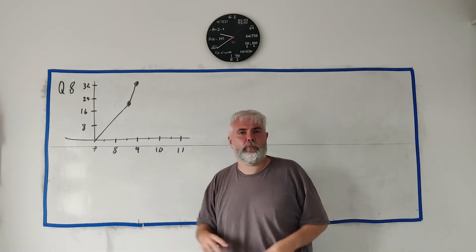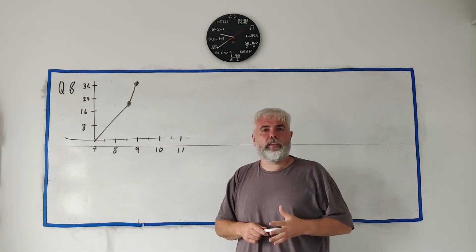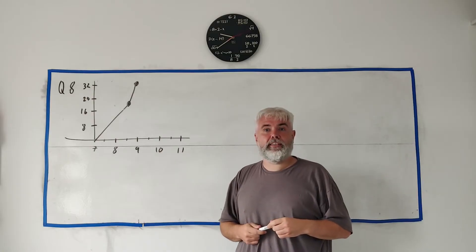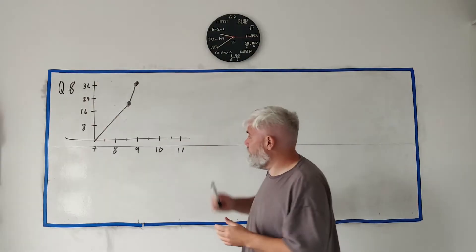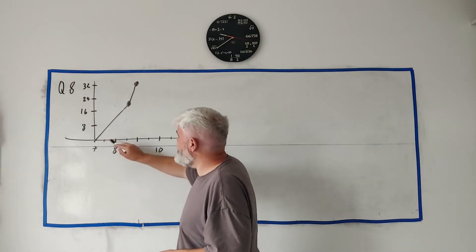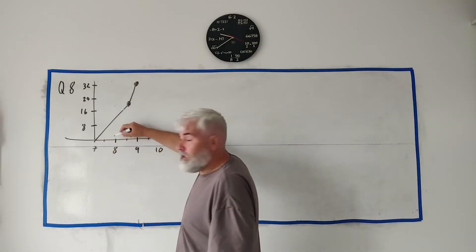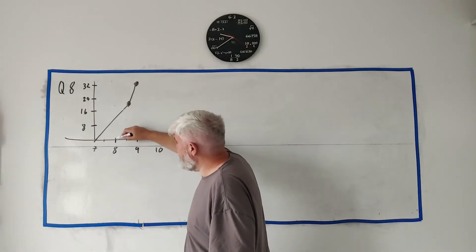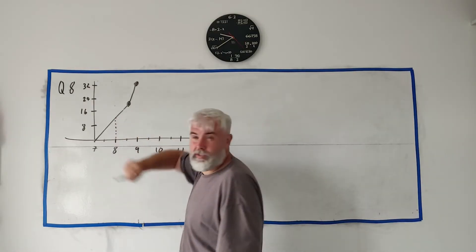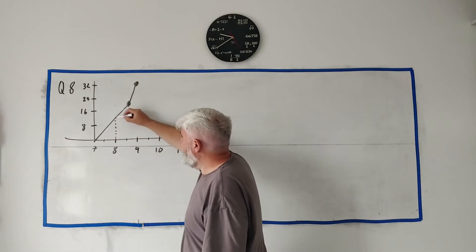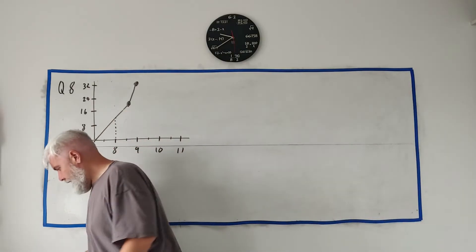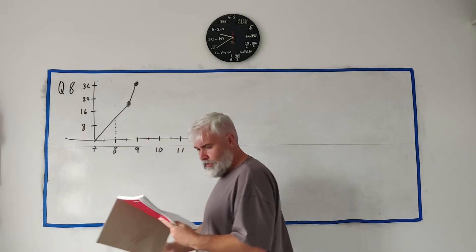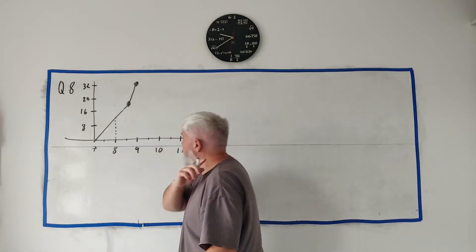They're going to ask us some questions. In part 1, they ask us to use the graph to estimate the distance Liam had cycled by 8 o'clock. Between 7 and 8, so you go to 8 o'clock on the graph. They want to see a dotted line come up—there's already lines on the graph—and then they want to see at this point go across.